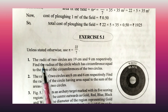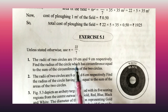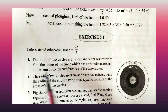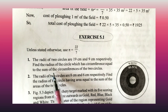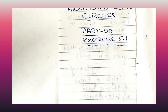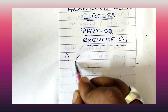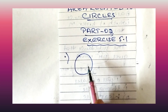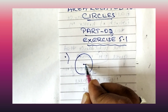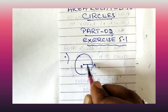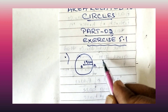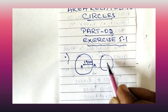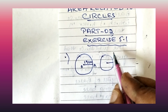The first question: the radii of two circles are 19 centimetre and 9 centimetre respectively. Find the radius of the circle which has circumference equal to the sum of the circumferences of the other two circles. Now let us draw one circle — its radius is 19 centimetre, and another circle whose radius is given as 9 centimetre.